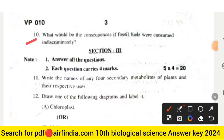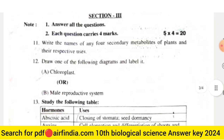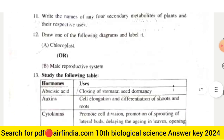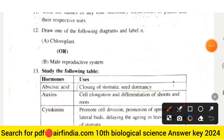Question ten: what would be the consequences if fossil fuels were consumed indiscriminately? Section three carries 20 marks — answer all questions, each carries four marks. Question eleven: write the names of any four secondary metabolites of plants and their respective uses. Question twelve: draw one of the following diagrams and label it — either chloroplast or the male reproductive system.